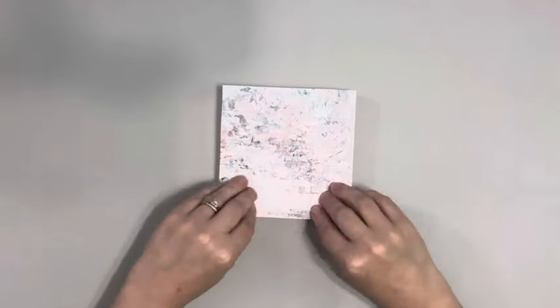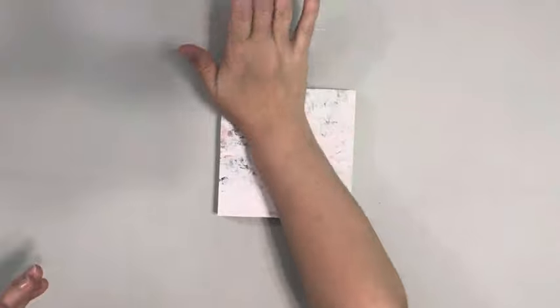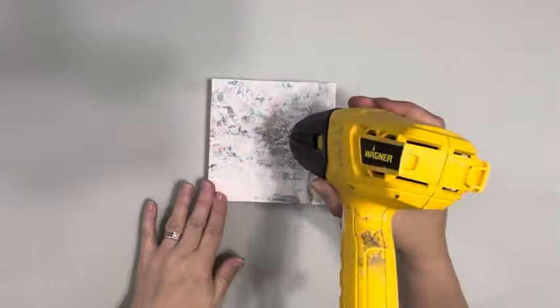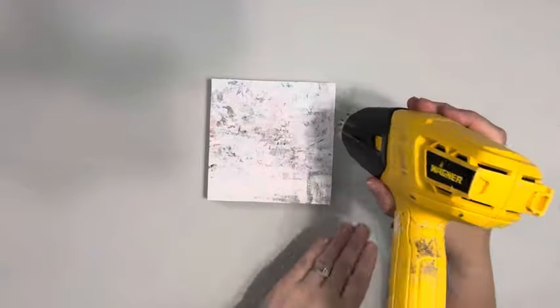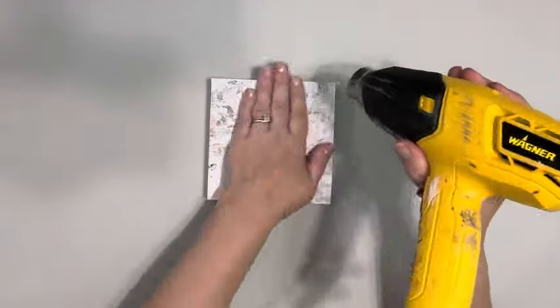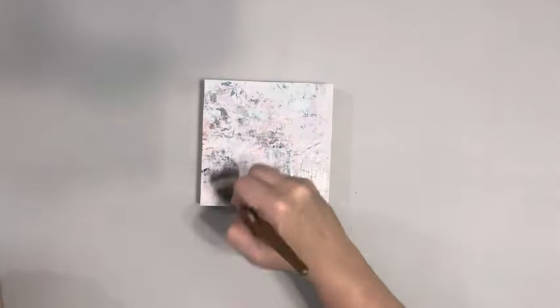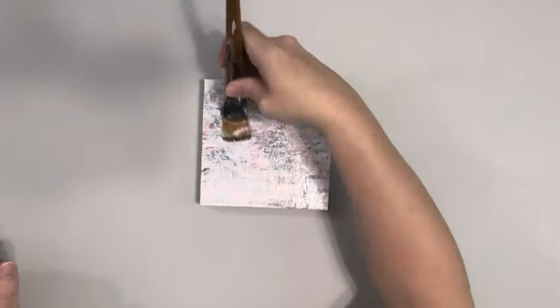I then used my heating tool to dry it, smoothing it as I go along to make sure there's no bubbles or wrinkles. Once that's dry, I add a layer of Mod Podge to the top, again using my heating tool to dry it and sanding off the excess paper.